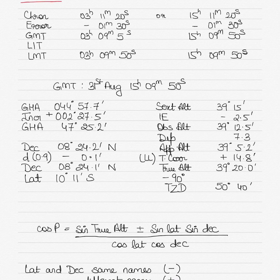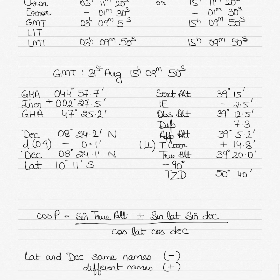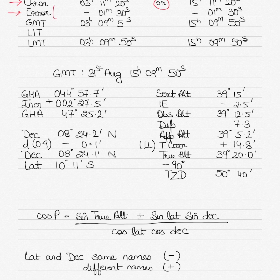Before starting the solution, we resolve the ambiguity of the chronometer time. Write down the chronometer time from the question, then add 12 hours to get a second option — there are two possible chronometer times. The error is given as fast, so we subtract the error of 1 minute 30 seconds from both options to get two possible GMT times.